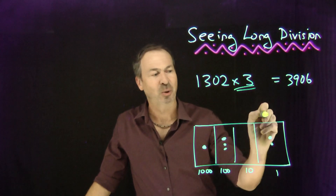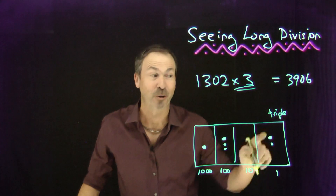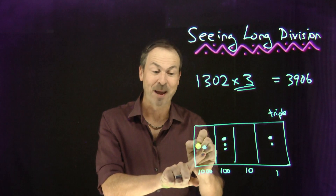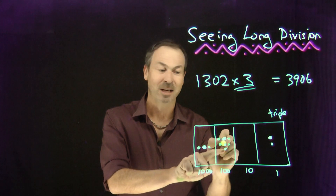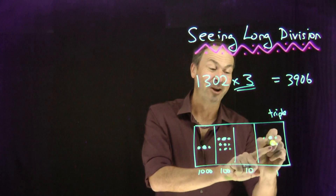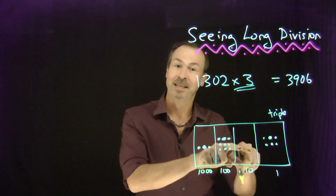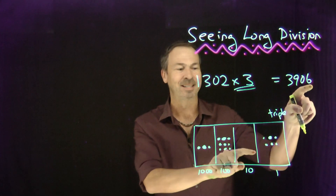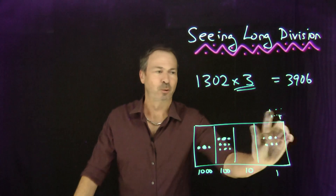This multiplication problem is asking: please triple everything, please triple what you've got. I'm going to literally do that — I'm going to triple what I see. There's one dot, I triple it and make it three dots. I do that for each dot. Now I've got three dots in the thousands place, nine dots in the hundreds place, none in the tens place, and six in the ones place — I see the number three thousand nine hundred and six right there.